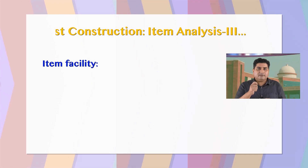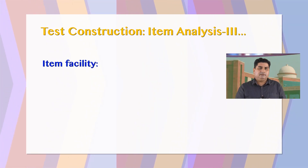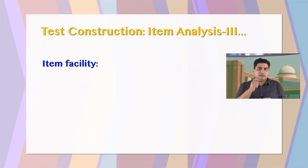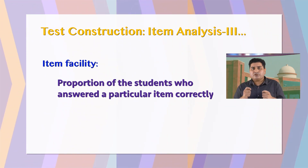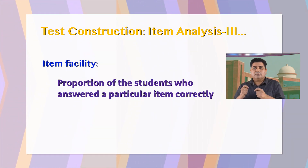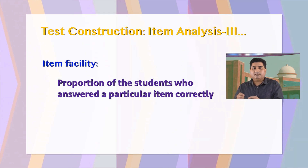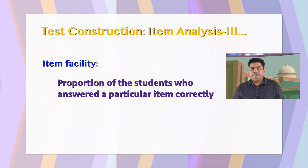One more thing in this discussion: we will use the term item facility. The term item facility will be used for the proportion of students who answered a particular item correctly. This proportion we have also calculated in the first item analysis case, but here we will use the term item facility for this.